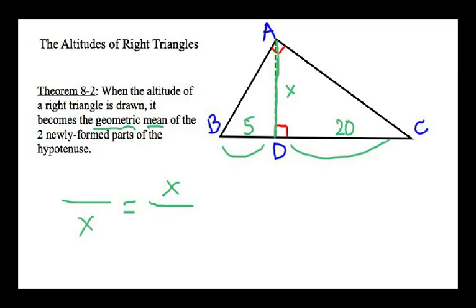So, 5 would go above the X, and the 20 would go below the other X. Now we solve by cross-multiplying. X squared equals 100, and of course, X equals 10, when we find the square root.